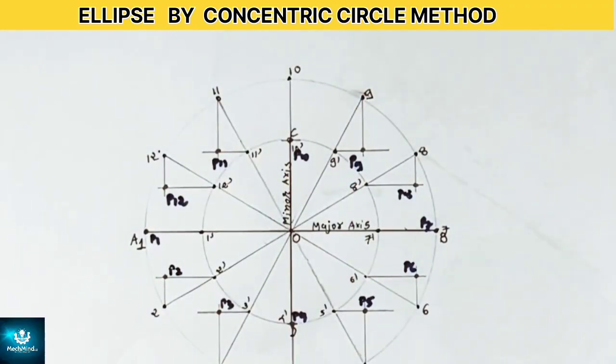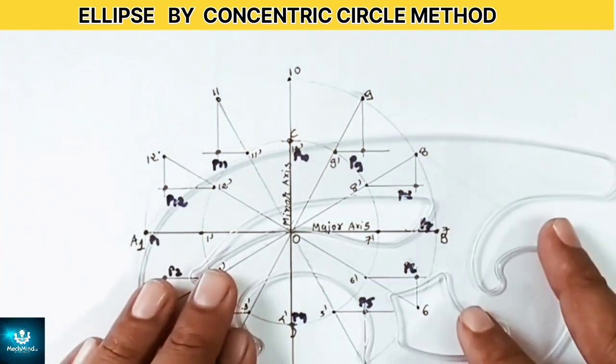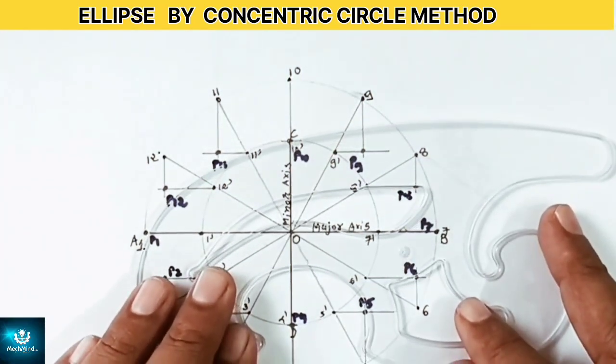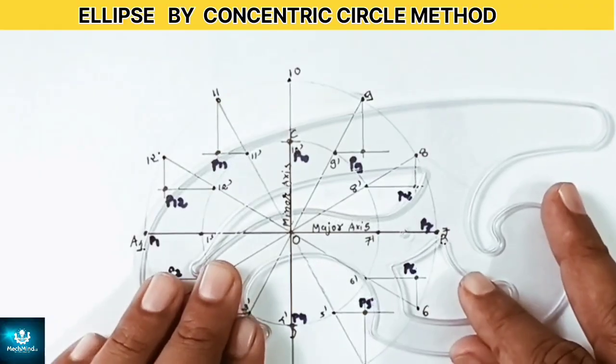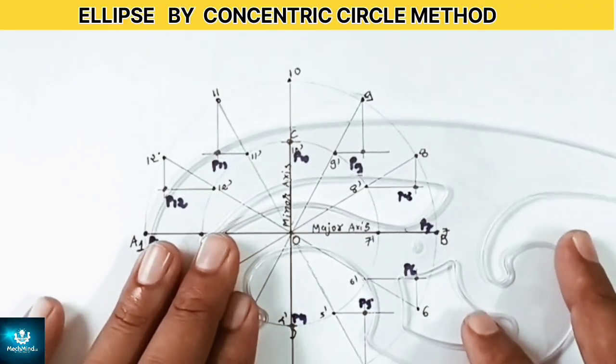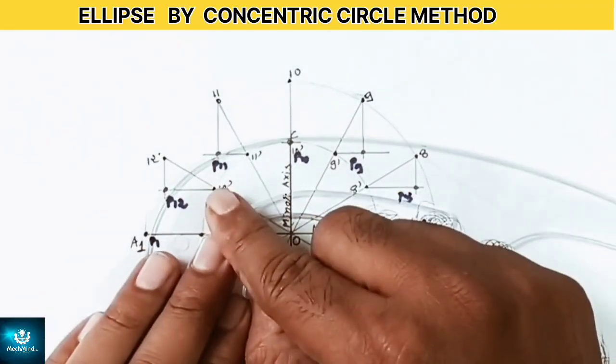Next using the French curve join all these points with a smooth curve to form the required ellipse.